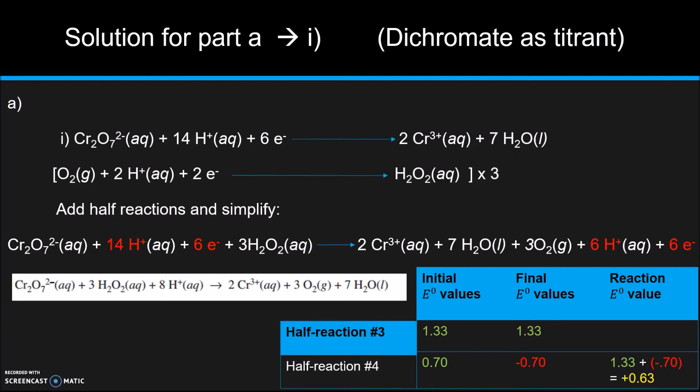So in this table, we have half reaction number three. We have an E⁰ value of 1.33 and we keep it the same because we do not flip the reaction over. And then the second one, we're going to flip it. So it's going to become negative 0.7 and then we're going to add them to get an overall value of 0.63 positive.